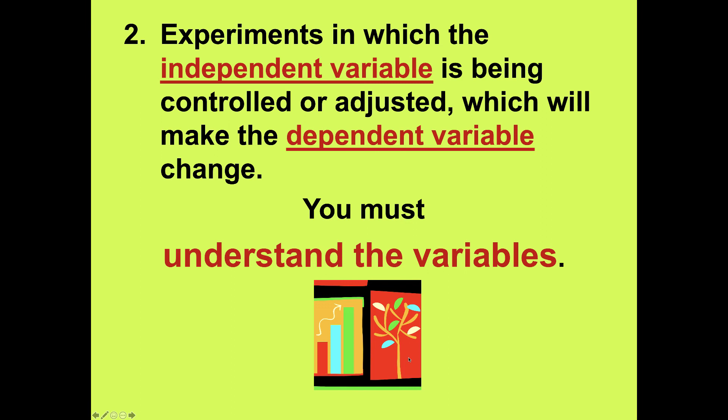The second type is a direct intervention trial, where you actually change variables. In observational studies, you identify what you're calling the independent variable — in the polar ice example, that would be temperature or global warming — and the dependent variable would be the melting of the polar ice. In interventional studies, you directly change the independent variable and measure its effect on the dependent variable. It is absolutely critical that you understand what the variables are.